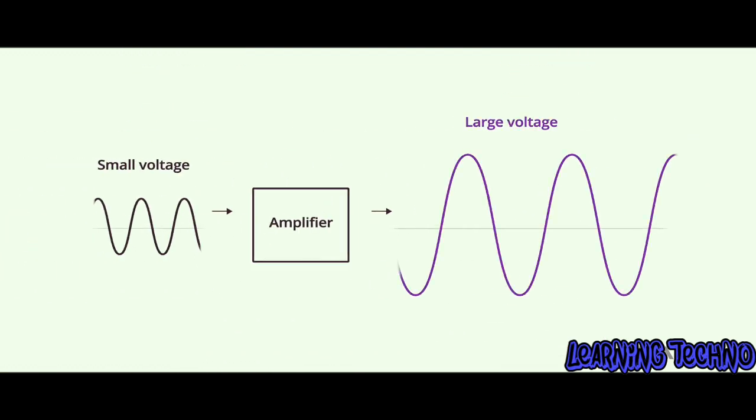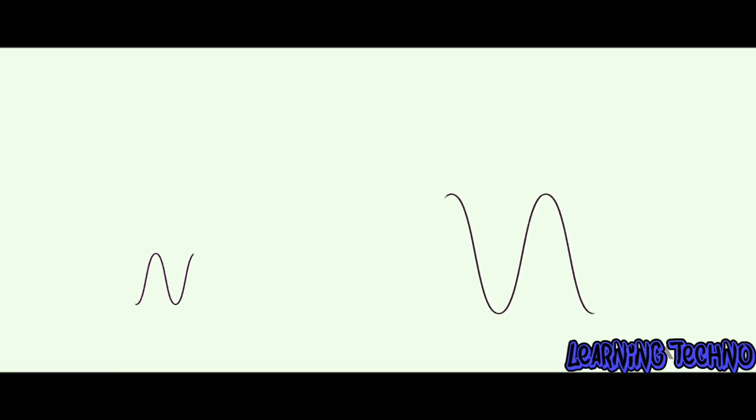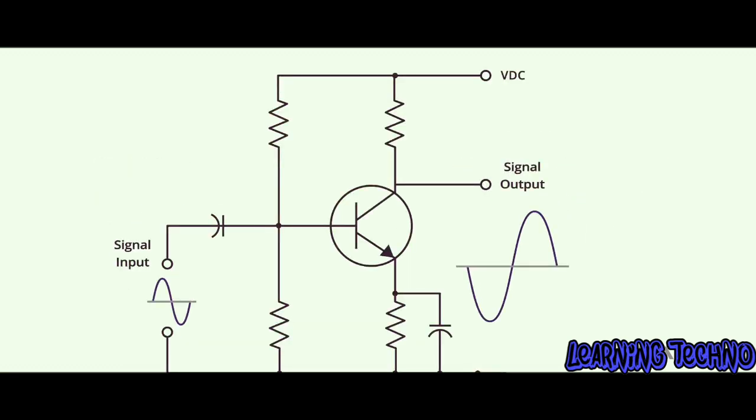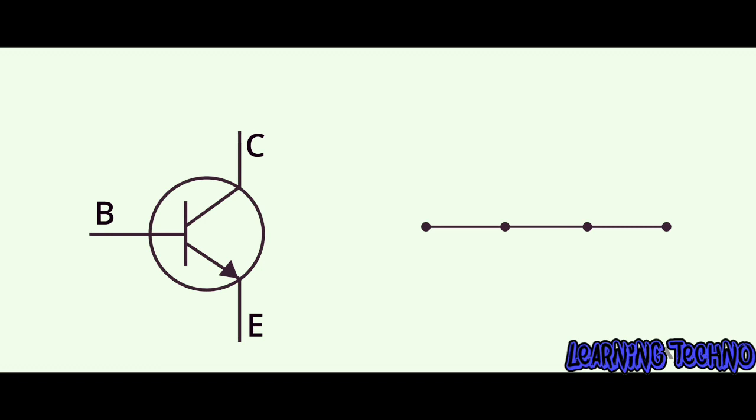If we look at controlling a large voltage with a small voltage, we can say that we are performing an amplification. A transistor can do that. The transistor's ability to act as a switch or perform a transfer of resistance makes it a very useful component in industrial applications.